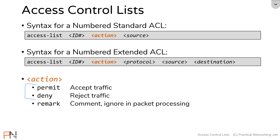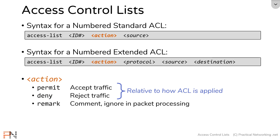Permit and deny are actually processed against traffic, and they are relative to how the access list is applied. For example, if you apply an access list to an interface, permit allows traffic through and deny blocks it. But if you apply the access list to network address translation, permit means you will translate matching packets, and deny means you will not — though that packet might still be allowed through the interface.